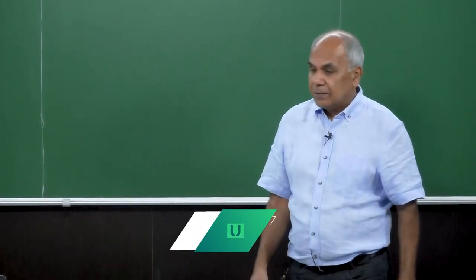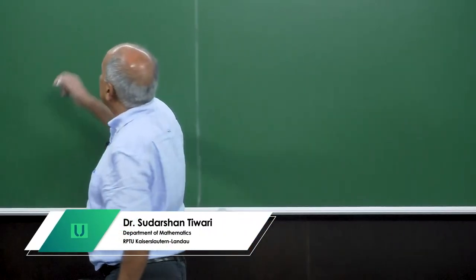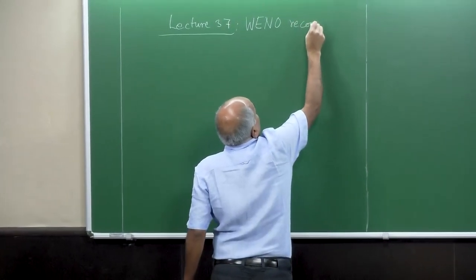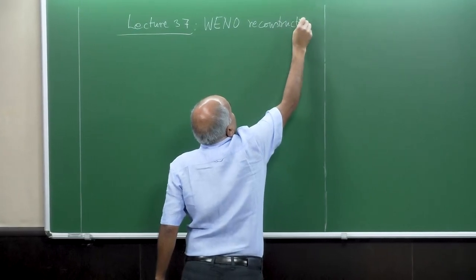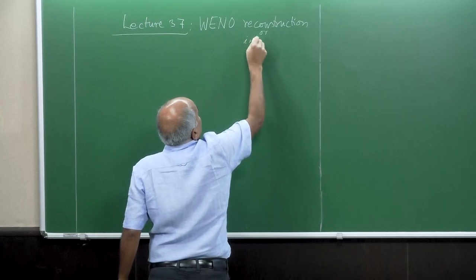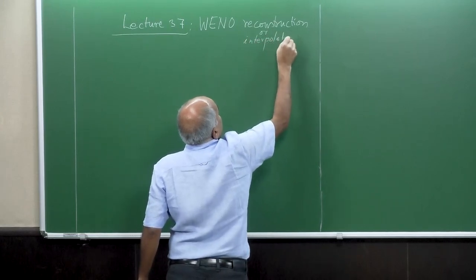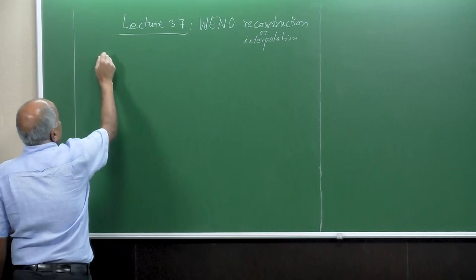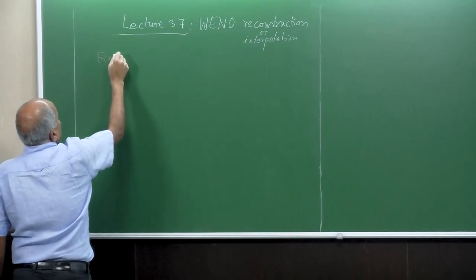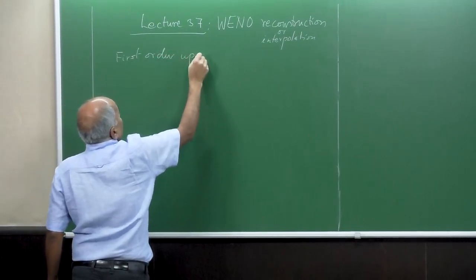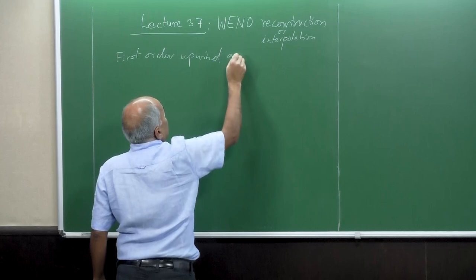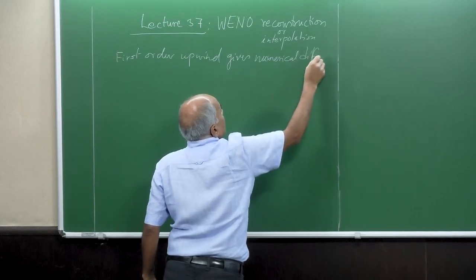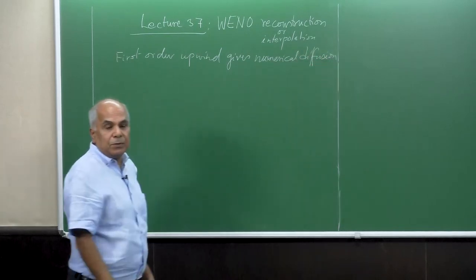Welcome back to our next lecture. In this lecture, I discuss some type of WENO reconstruction or interpolation. As we have seen, the first-order upwind gives numerical diffusion, so the solution is very diffusive and we smooth out the solution.